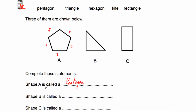Shape B has one, two, three straight sides, so that will be a triangle. And finally, shape C — if we have a look at shape C, you can see that's a rectangle. In our list we've got the option rectangle, so shape C is called a rectangle.